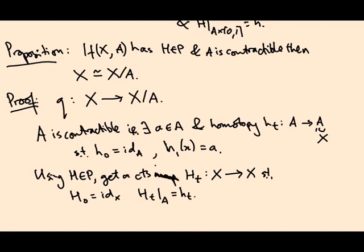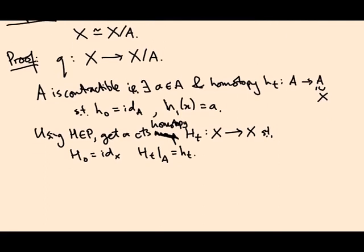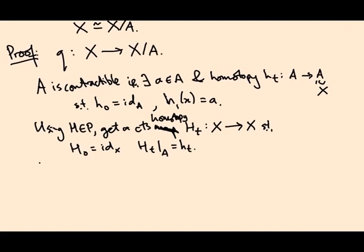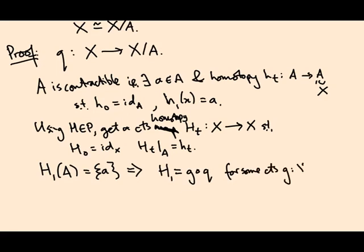Yes, I should say a homotopy on the map. So that's how you're using the homotopy extension property. Now H_1, if we think about what H_1 does, well all we know is that if we restrict it to A, we get little h_1, and little h_1 is the constant map, so big H_1 applied to the whole set A gives us the singleton set little a. All of these points get crushed down to one point. And that means that H_1 factors as g compose the quotient map for some continuous map g, defined on the quotient space.